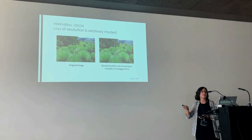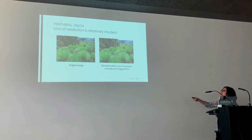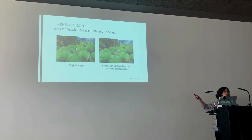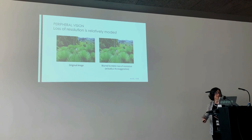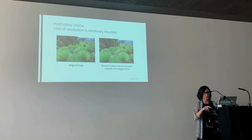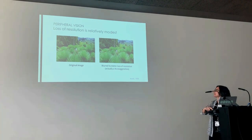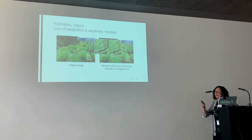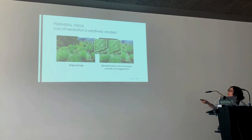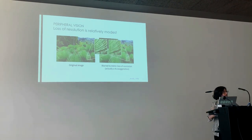However, you cannot read a page of text without moving your eyes — and that's not because of resolution. That's because of something called crowding. Here's the basic phenomenon: if you fixate on a plus, you find it relatively easy to see a V on the left. But if you flank it with nearby clutter, it becomes considerably harder to read that V. If you move the clutter away to what people call the critical spacing, it becomes easy again. This is known as crowding — peripheral vision is very sensitive to clutter.